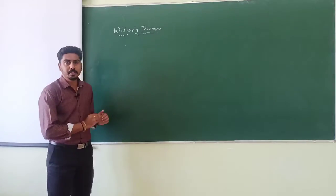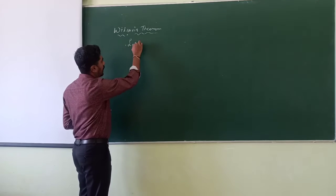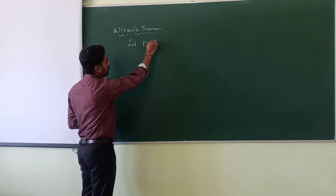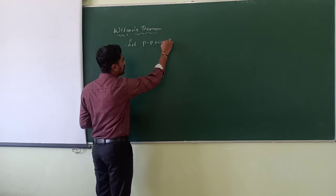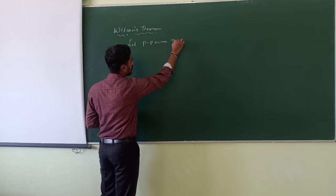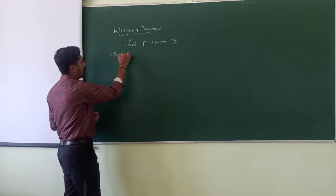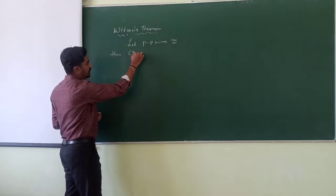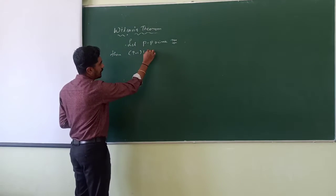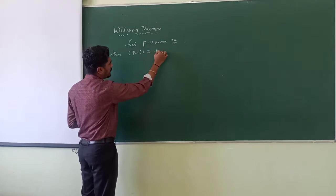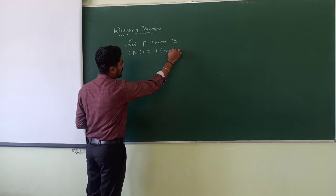Wilson's theorem: Let p be a prime number, then (p minus 1) factorial is congruent to minus 1 modulo p.